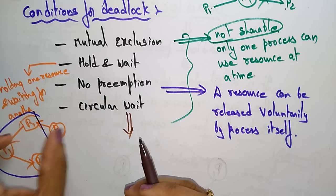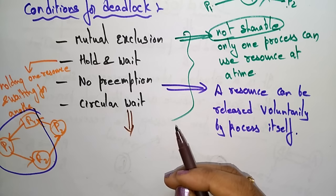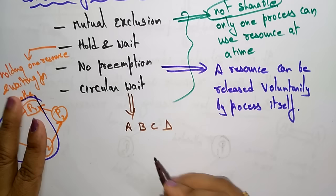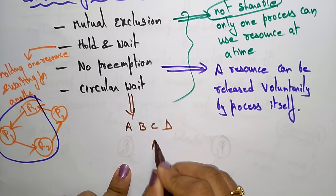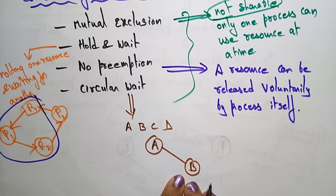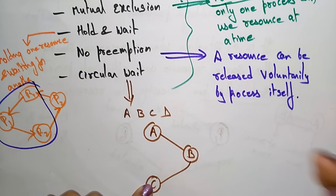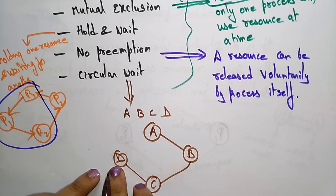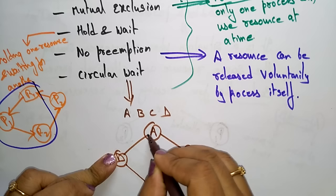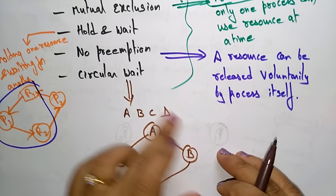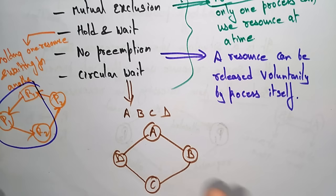Circular wait: consider four processes A, B, C, D. Process A acquired some resources needed by B. B acquired resources needed by C. C acquired resources needed by D. And D acquired resources needed by A. Everyone is waiting for another process to release. This condition is called circular wait — there is no solution; it leads to a deadlock state.